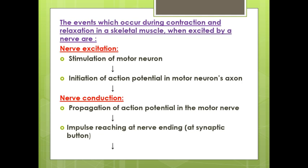A flowchart gives a simple explanation of how the procedure occurs. First, there is nerve excitation: stimulation of the motor neuron and initiation of an action potential in the motor neuron's axon. Then there is nerve conduction, involving propagation of the action potential in the motor nerve.